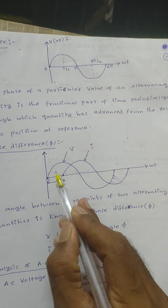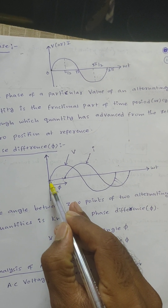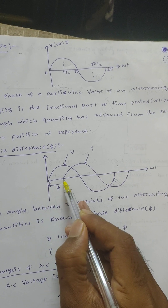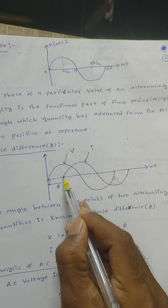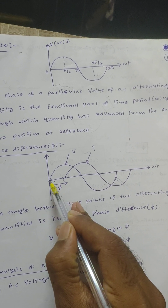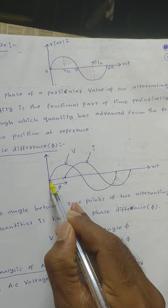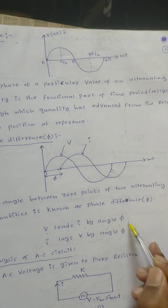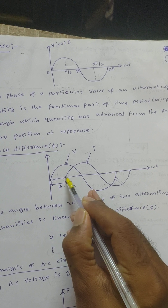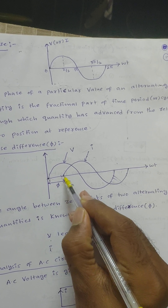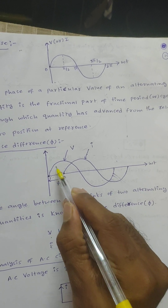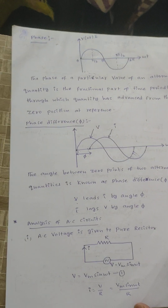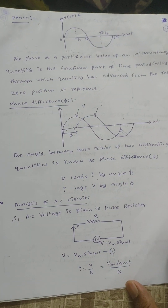From this phase diagram, voltage starts first — that is, voltage starts at zero degrees. After some angle, current starts. That means voltage is leading: voltage leads current by an angle phi, or current lags voltage by an angle phi. That is nothing but phase and phase difference.